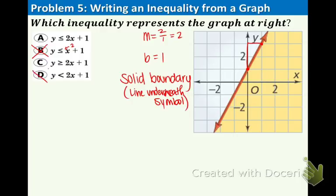And that's going to get rid of option D because there is no line underneath the symbol. Lastly, you can tell that it is shaded below the line.